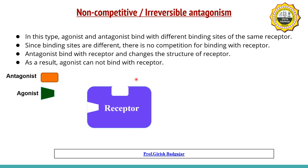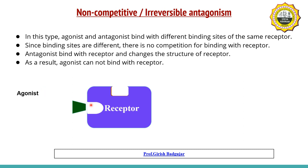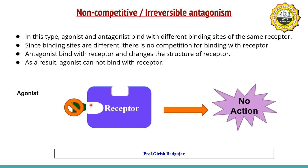In the structure of the receptor, there are two binding sites — one for the agonist and another for the antagonist. When the antagonist binds with the receptor, it brings about structural changes. Since the structure is changed, the agonist cannot bind with the receptor and is prevented from producing action. This antagonism is irreversible because we cannot restore the receptor to its original structure.